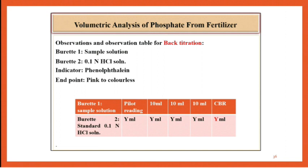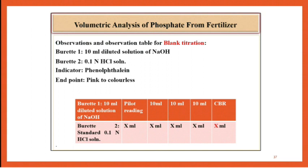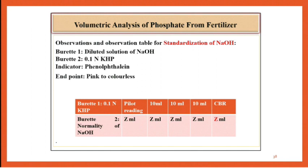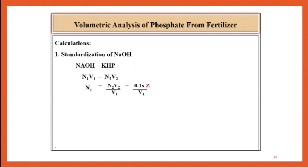Observation table for back titration: Burette 1 contains 0.1 normal HCl; indicator is phenolphthalein; end point is pink to colorless; record reading as Y ml. Observation table for blank titration: Burette 1 contains 10 ml diluted NaOH; burette 2 contains 0.1 normal HCl; indicator is phenolphthalein; end point is pink to colorless; record reading as X ml. Observation table for standardization of NaOH: Burette 1 contains diluted NaOH; burette 2 contains 0.1 normal KHP; indicator is phenolphthalein; end point is pink to colorless; record reading as Z ml.